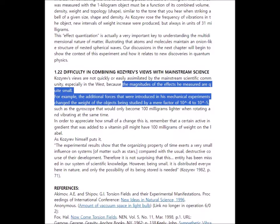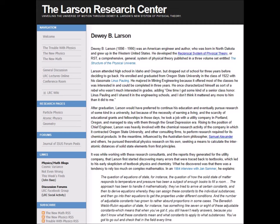How could we take Kozyrev's cosmology and figure out how to produce macro effects for full-scale levity or levitation? This brings us to another scientist by the name of Dewey B. Larson. Dewey B. Larson was an American engineer and author who was born in North Dakota and grew up in the western United States. He developed a Reciprocal System of physical theory, also known as RST.